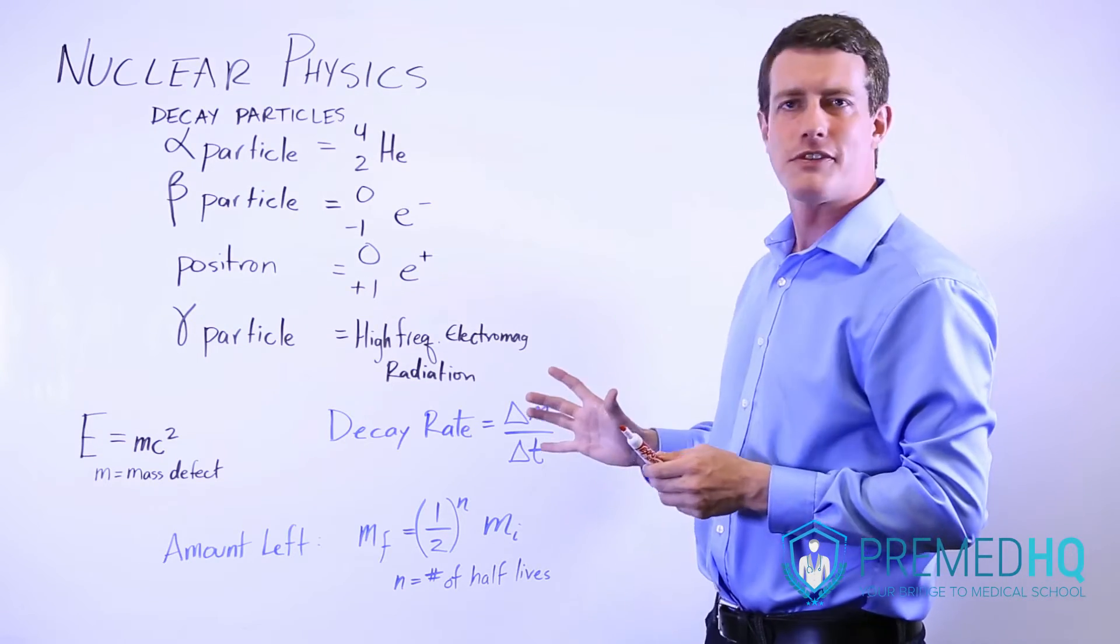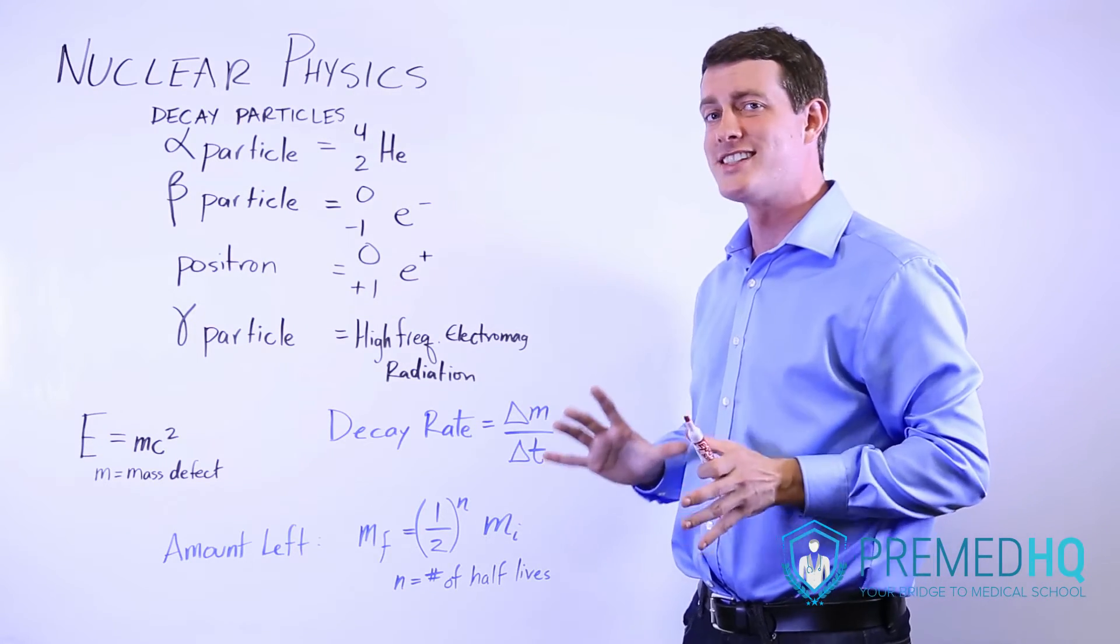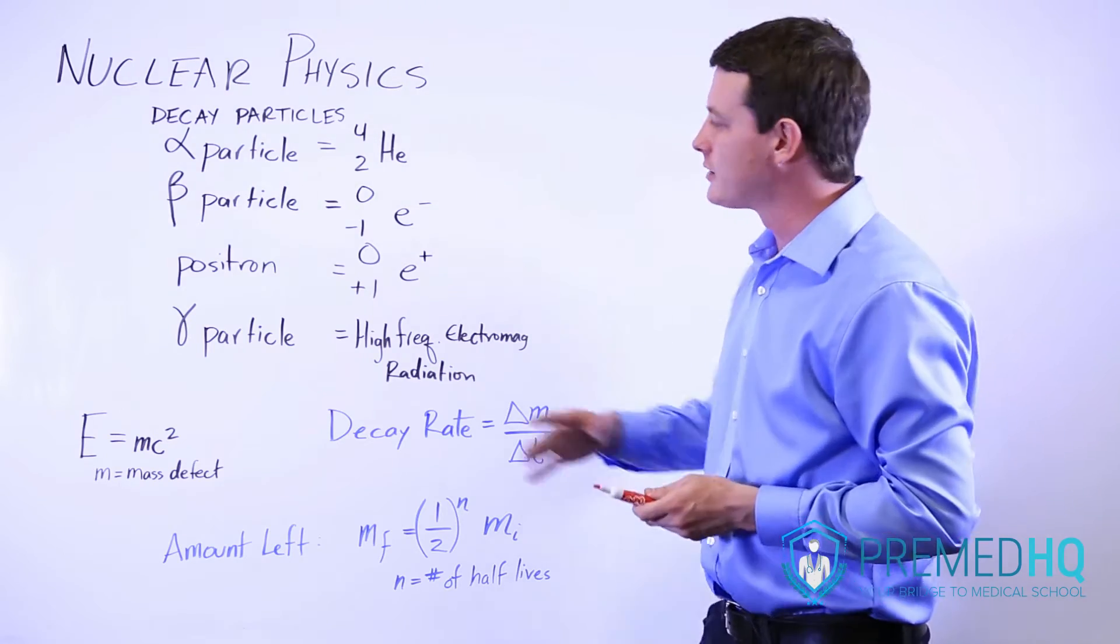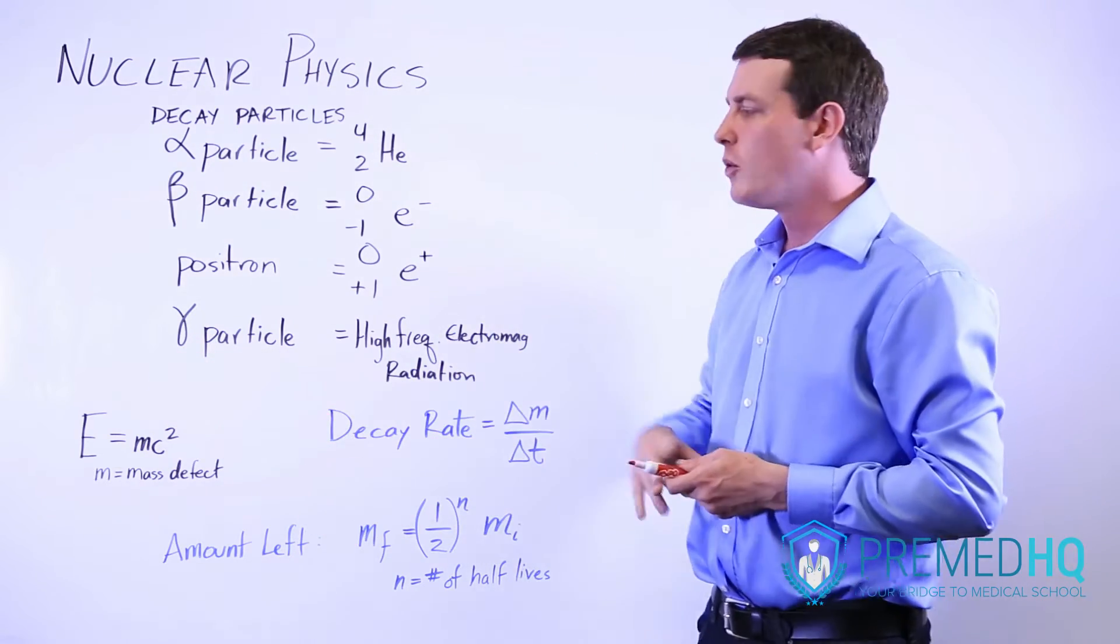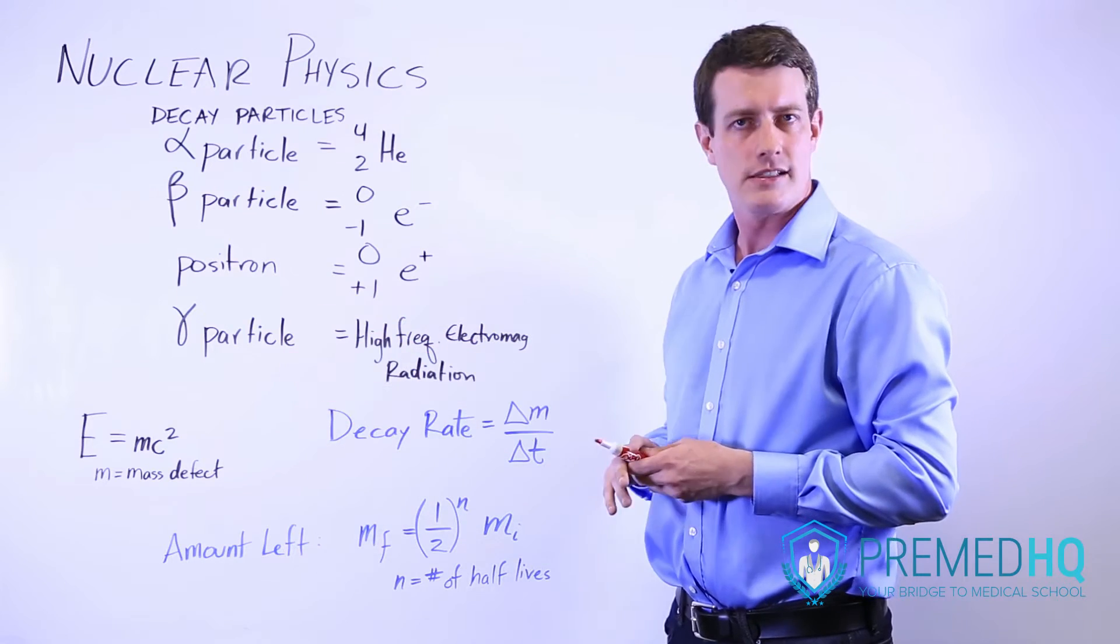Now, how does this relate to physics? There are several different ways that it can. One is this famous equation E equals MC squared, where C is the speed of light and E is energy.